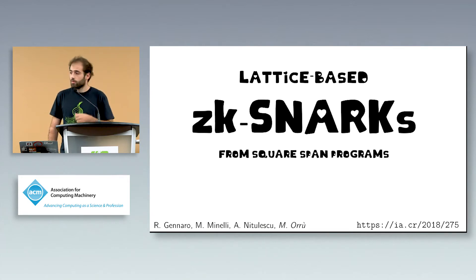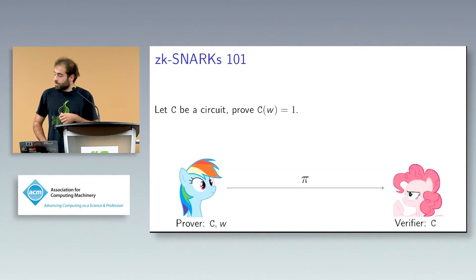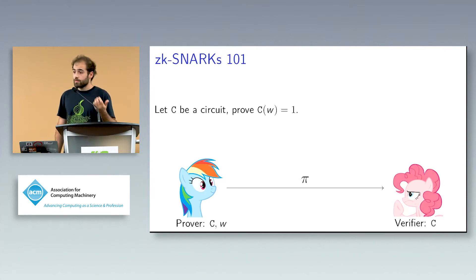I study them together with Anka right there, Rosario somewhere in the audience, and also Michele Minelli. Zero-knowledge-SNARK, generally any zero-knowledge proof system, if you want a slow motion version of what Jonathan Katz said, solves the problem of a prover trying to prove something to the verifier without necessarily revealing this something.